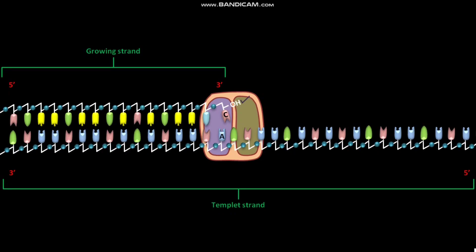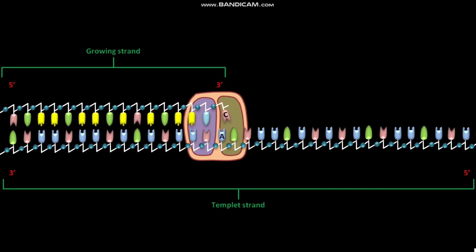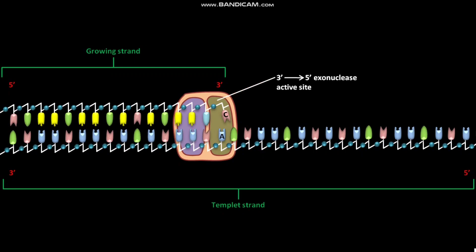DNA Polymerase 1 then slides back. As a result, the mispaired base lies in the 3' to 5' exonuclease active site. The mispaired nucleotide is then removed.